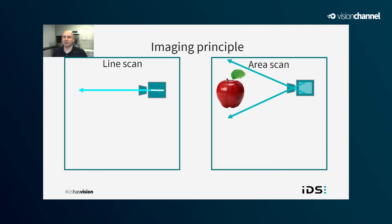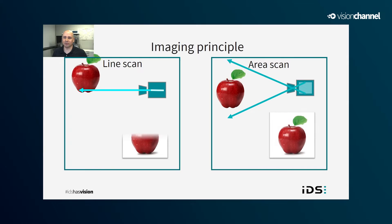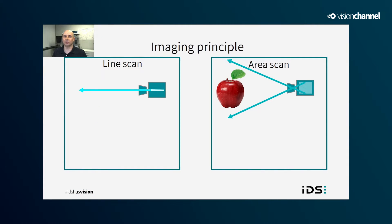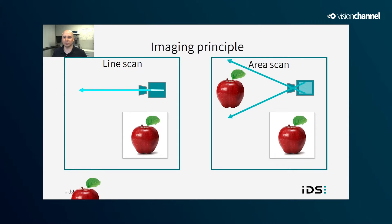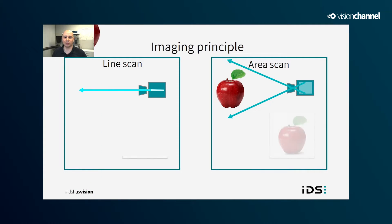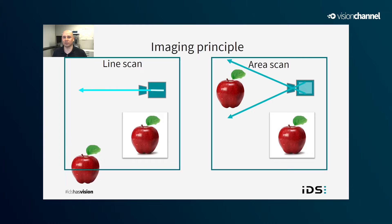Nowadays, when we talk about digital image sensors, we're usually referring to area scan sensors, also called 2D or matrix sensors. These are two-dimensional arrays of pixels capable of capturing the subject in a single snapshot. This is the type of sensor you would find in digital cameras and smartphones, and it's what most people think of when referring to normal photography.